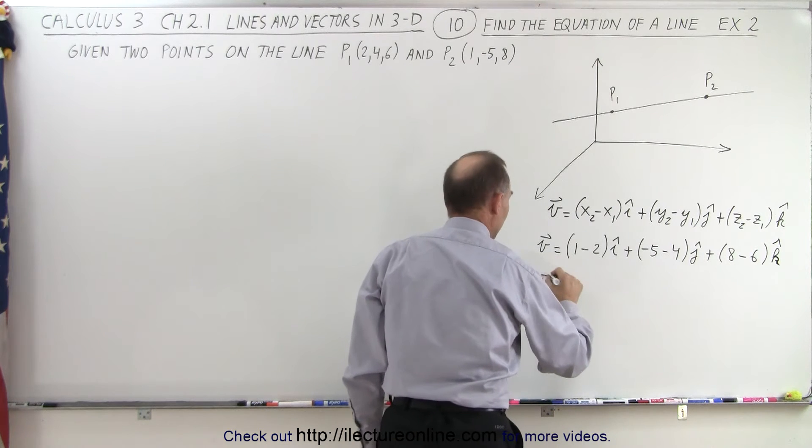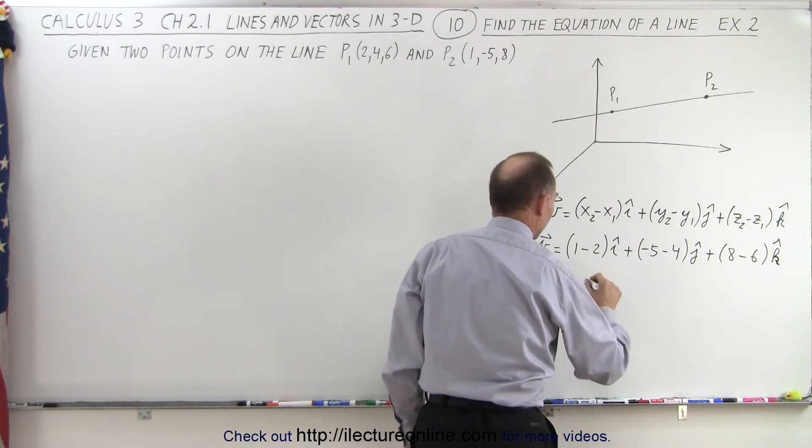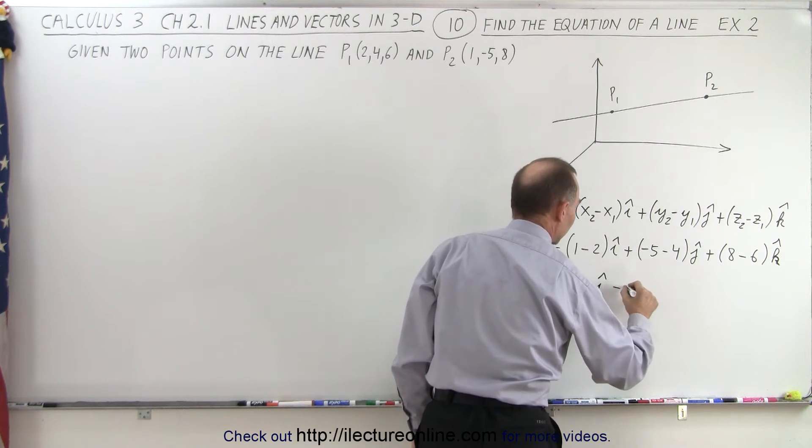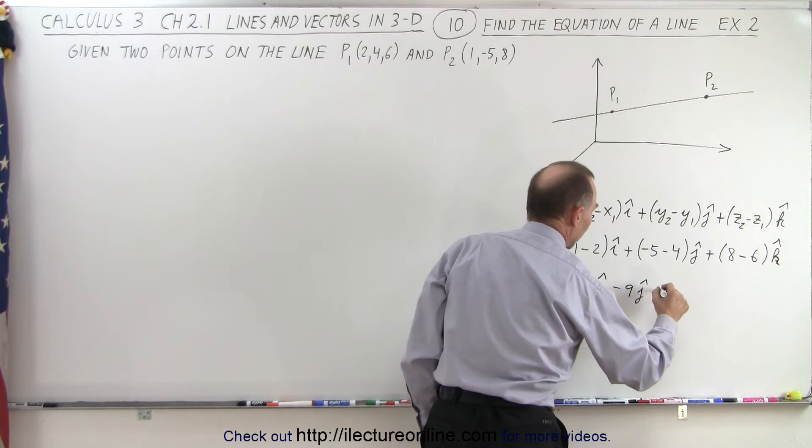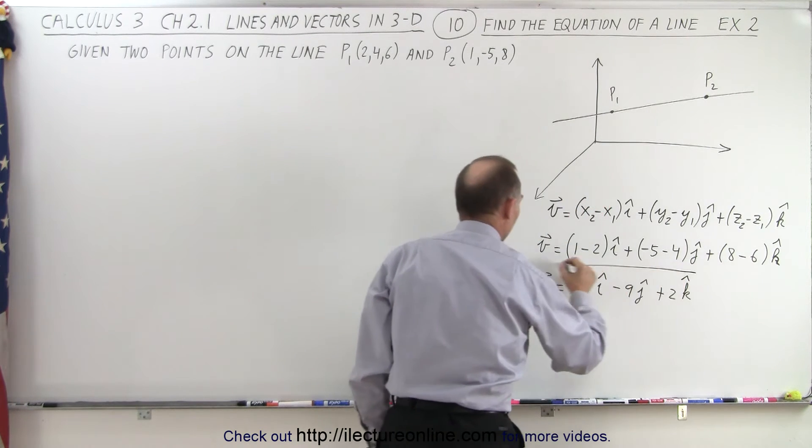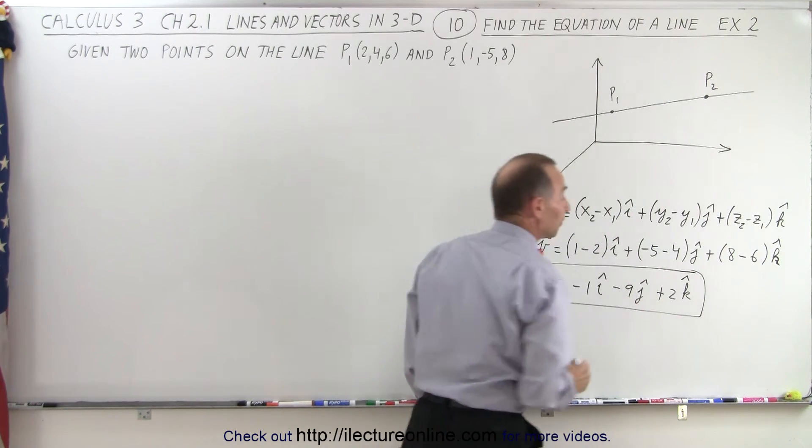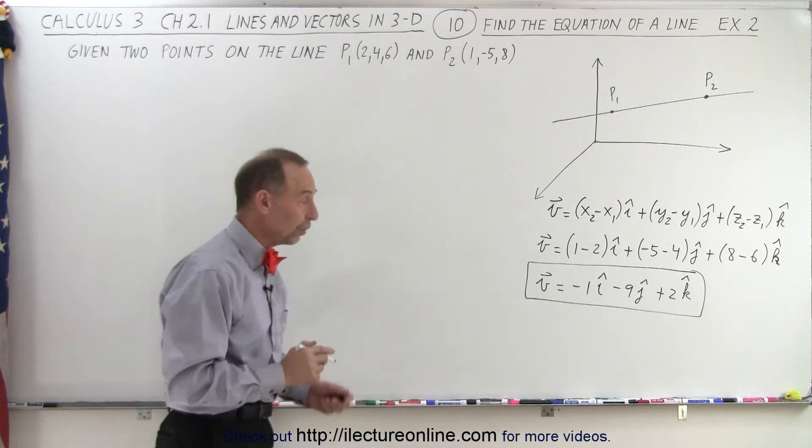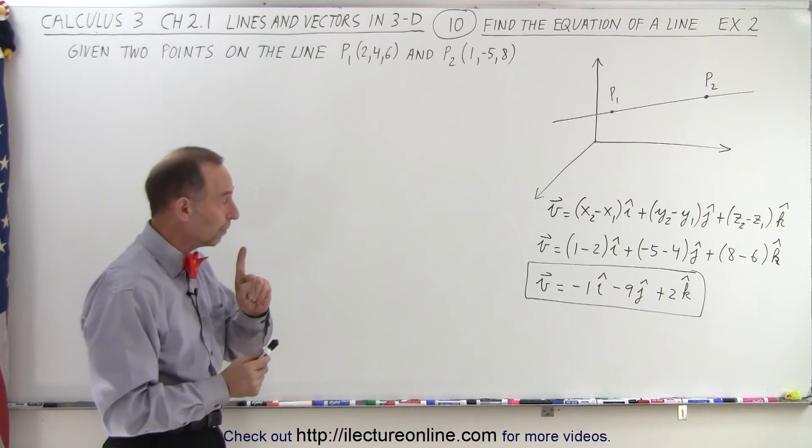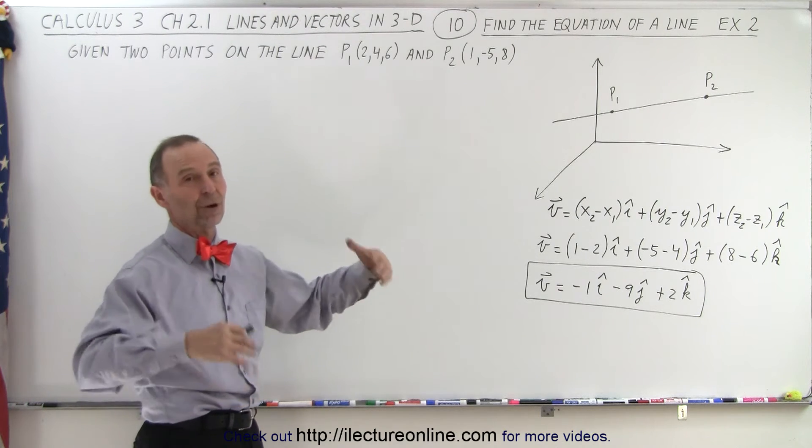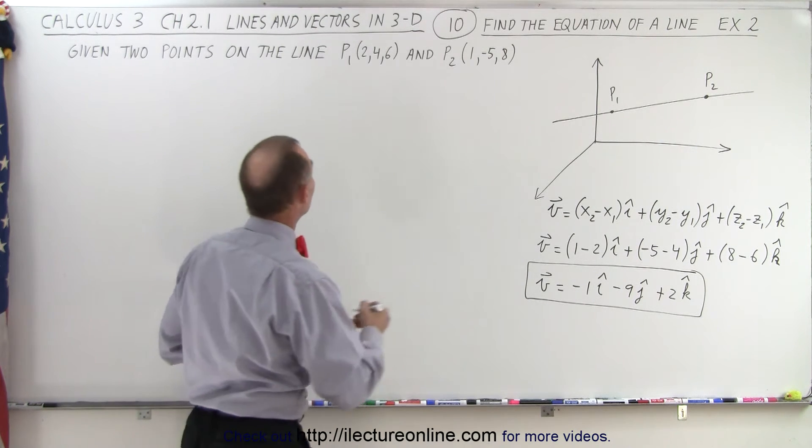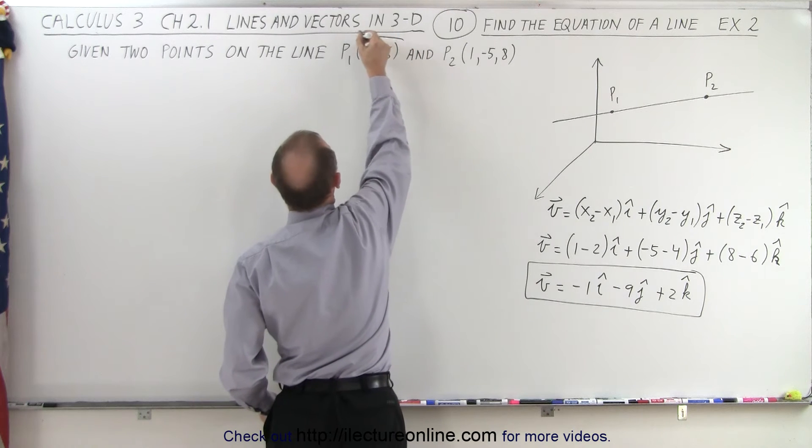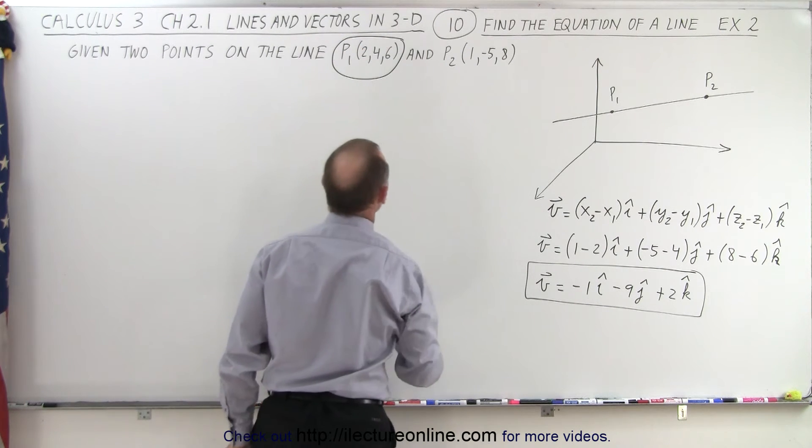And so we get v is equal to minus 1 in the i direction, minus 9 in the j direction, and plus 2 in the k direction. There is our parallel vector. Now remember, in the previous video, we knew that if we have one point and the parallel vector, we can find the equations. So let's go ahead and pick one point, doesn't matter which one we take, so let's take that point.